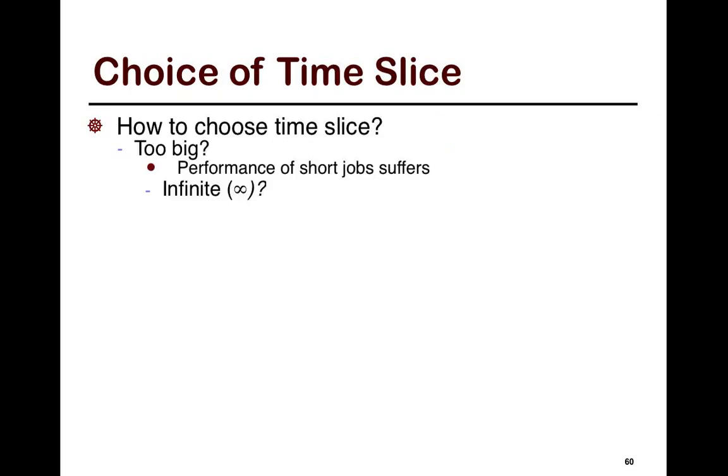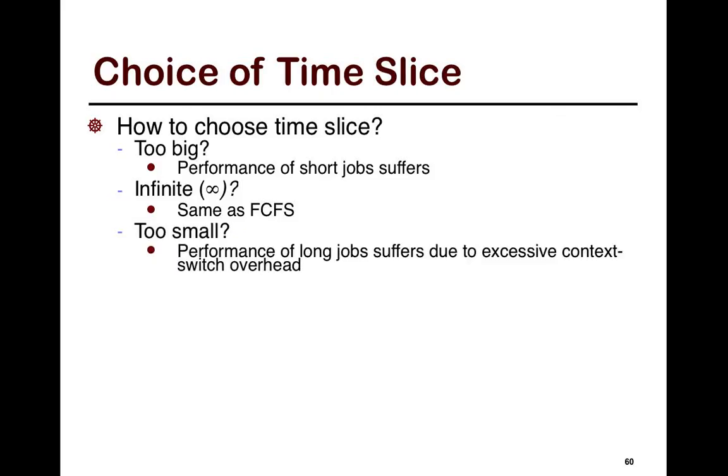So, the first thing we look at is what happens if your quantum is too big. Then your performance of the short job suffers, right? So, if you have quantum that's too big, what's going to happen is that if you have a short job that just happens to come later in the system, or is lost in the queue,